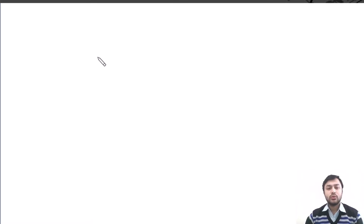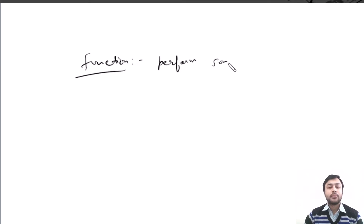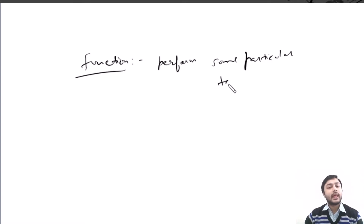What is a function in C++? A function is basically a block of code, or it is a group of statements, that is used to perform some particular task. The particular task can be addition, subtraction, division, or any other.